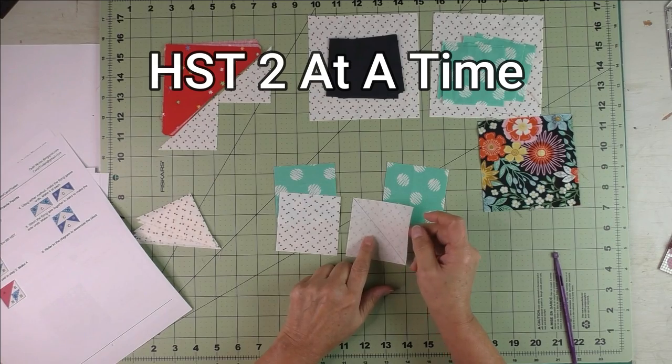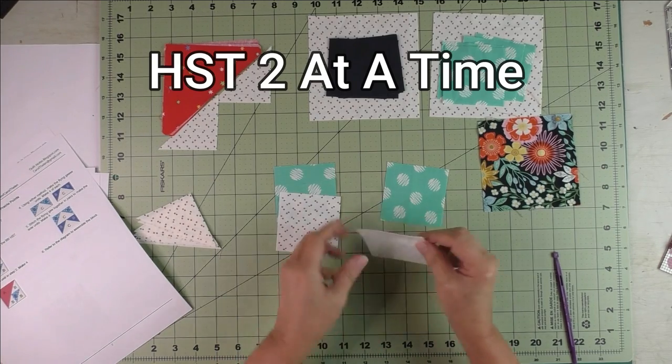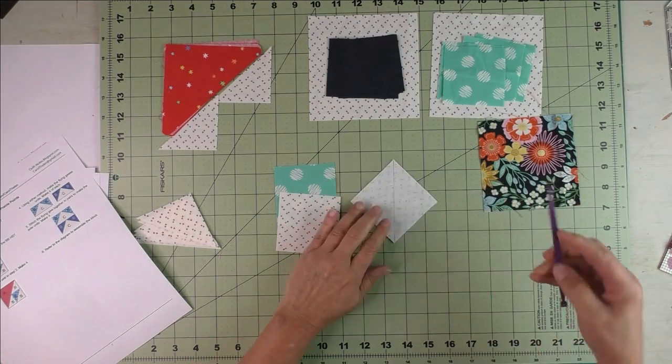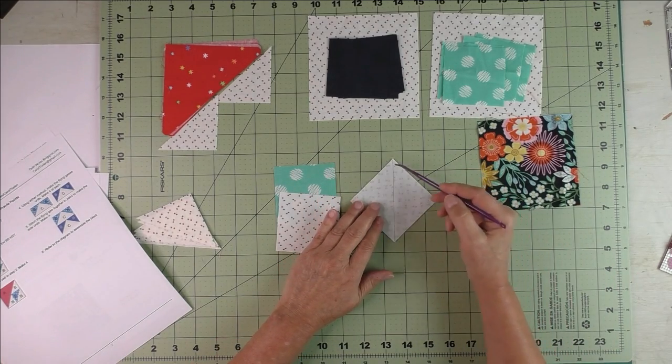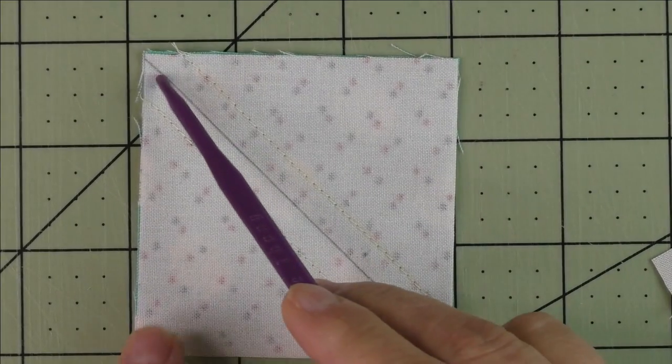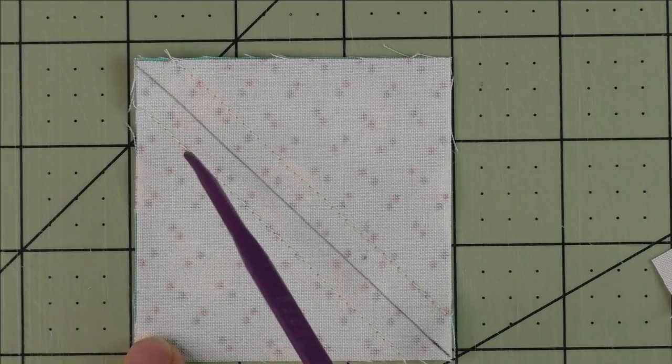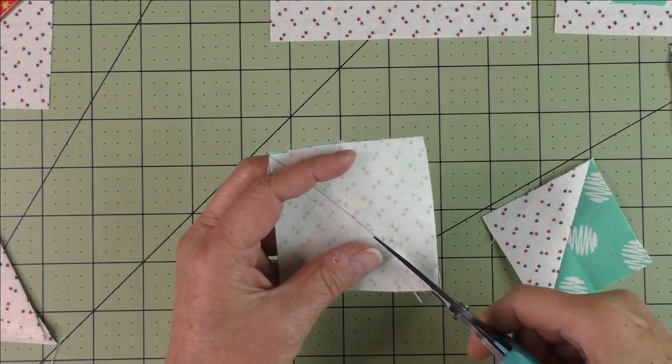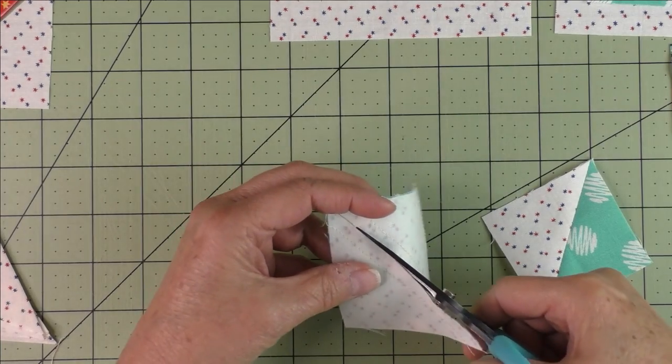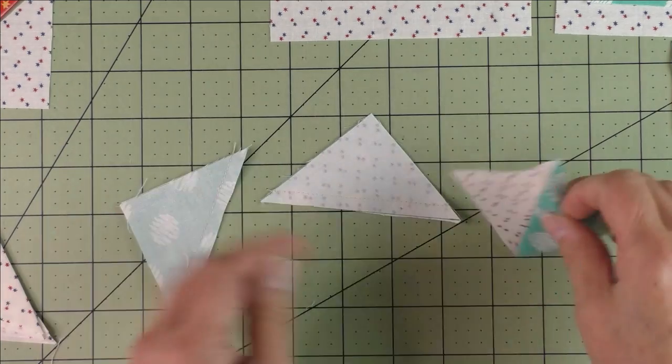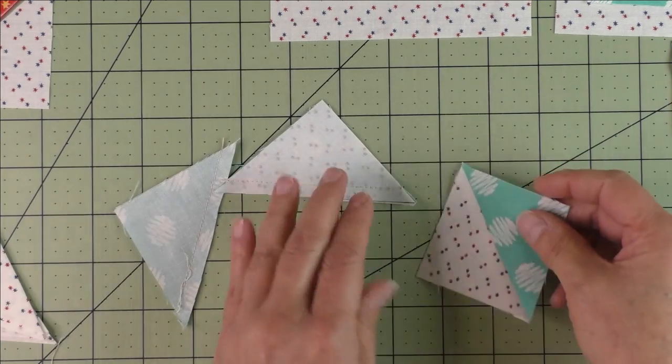On the back side of the light fabric we're going to draw a diagonal line, put the fabrics together right sides together, and we're going to stitch on either side of the diagonal line. Here is the diagonal line drawn and then the stitching on both sides. Now we cut this in half along the diagonal line. Then we have our two half square triangles. Press the seams open and cut off the nubs.